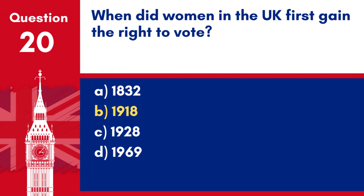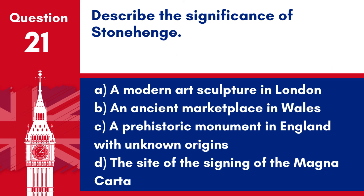Answer: b. Women over the age of 30 who met minimum property qualifications were granted the right to vote in 1918, with universal suffrage achieved in 1928.